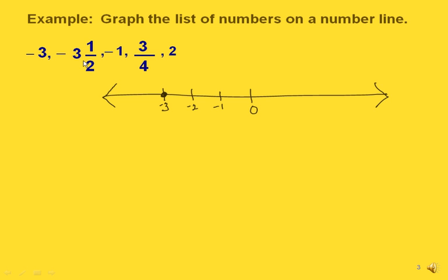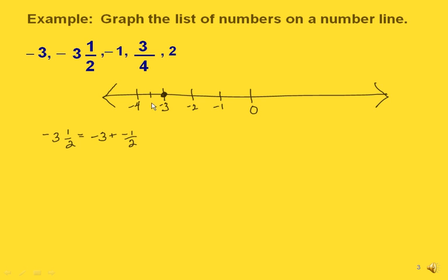Now the next one in our list is negative 3 and a half. Since we've already gone over this far to get to negative 3, we're thinking of negative 3 and 1 half as negative 3 plus a negative 1 half. That means we've already gone over to negative 3. Now we have to go over another half. So between negative 3 and negative 4, if we divide this into two equal parts, this part right here from negative 3 would be another negative 1 half. So this would be our negative 3 and 1 half.